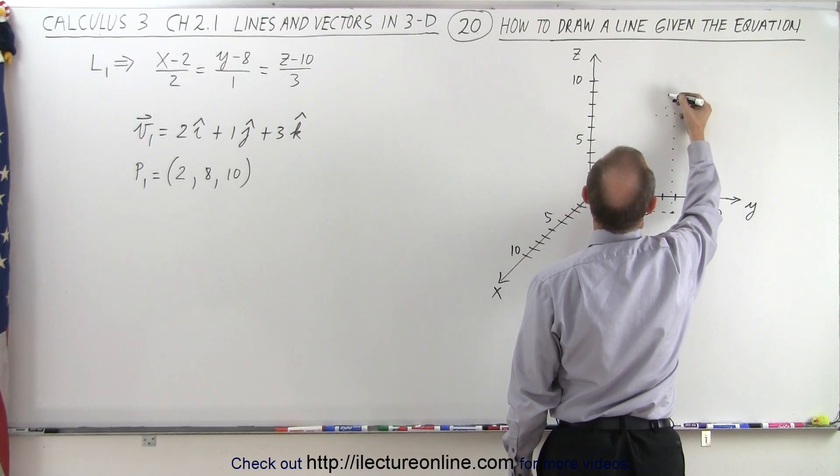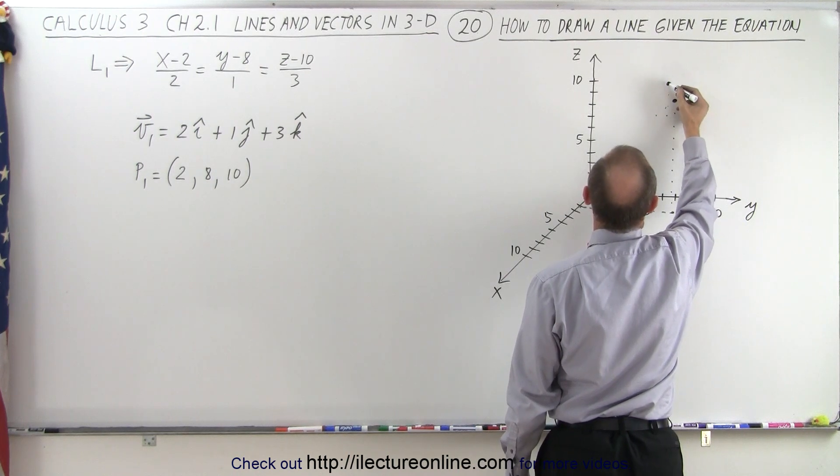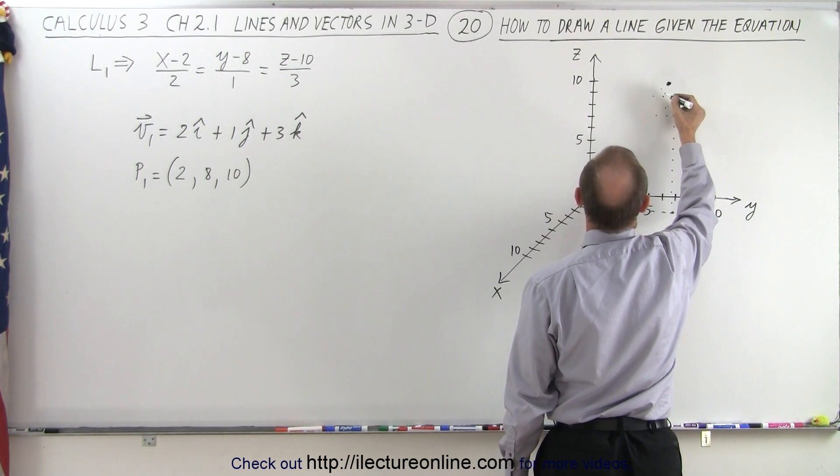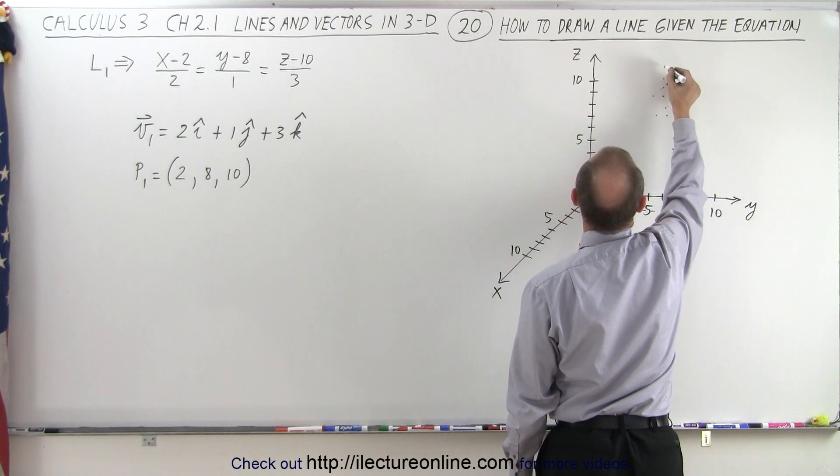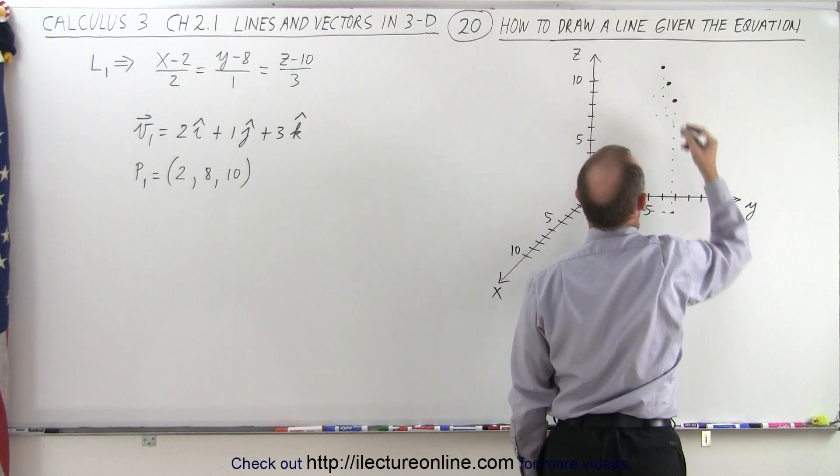1 in the y-direction so I go 1 to the right which is right here and then 3 in the z-direction so 1, 2, 3 and I make another point. I can do that again the second time: I go 1, 2 in the x-direction, 1 in the y-direction, 1, 2, 3 in the z-direction and notice all those points will fall on that line.